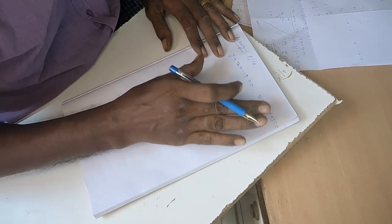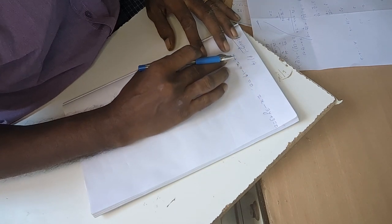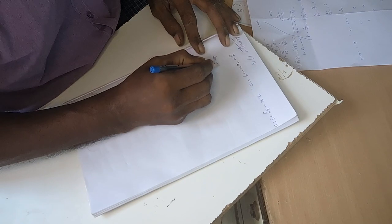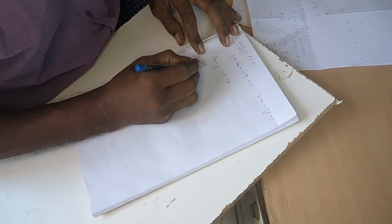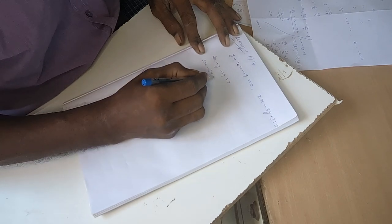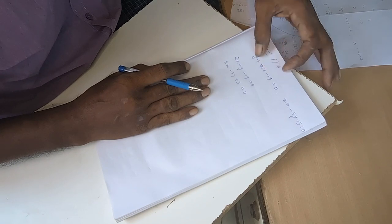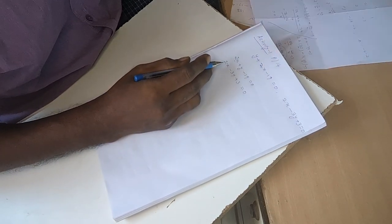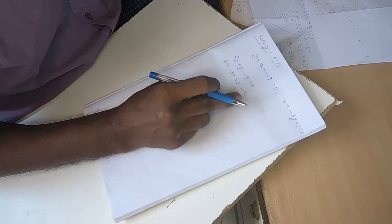The terms are in mixed order. Usually the general form has x first, so we rearrange the terms: 2x plus y minus 19 equal to 0 and 2x minus 3y plus 3 equal to 0. We write it with x first, then y, then constant.